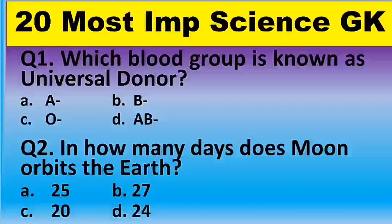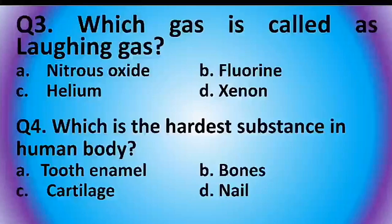Question 2: In how many days does the moon orbit the Earth? Options are: 25, 27, 20, or 24 days. The answer is option B: 27 days.